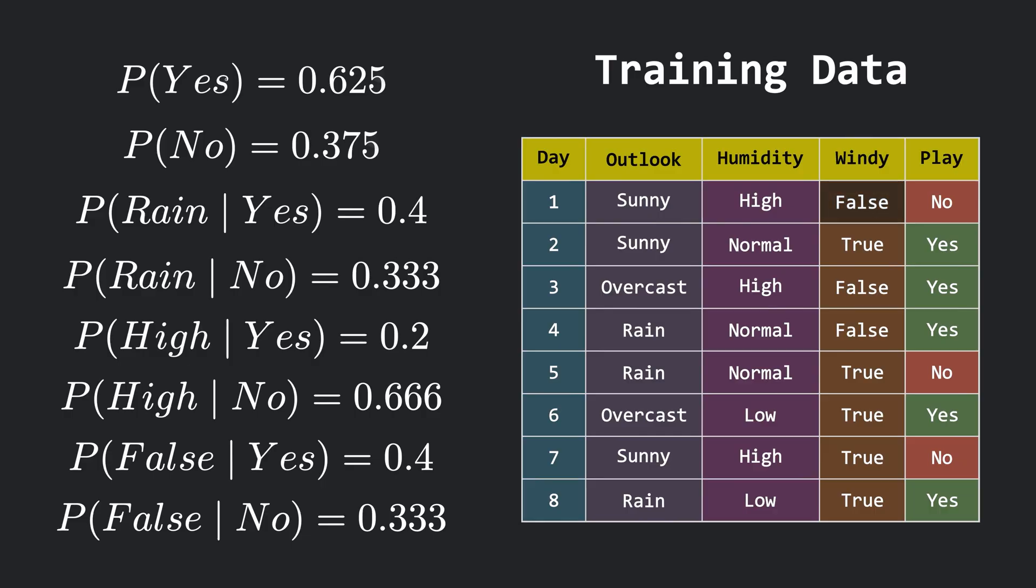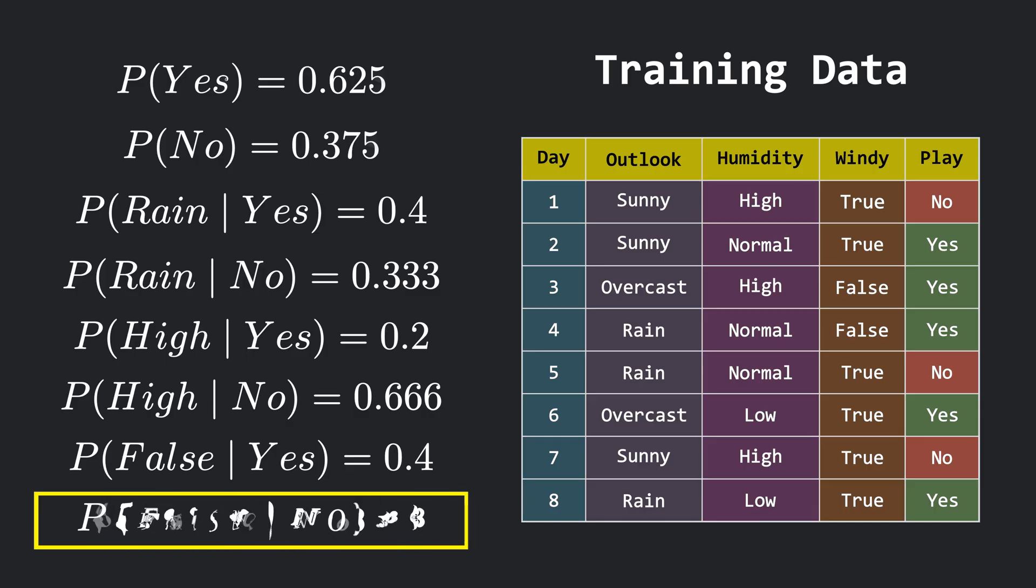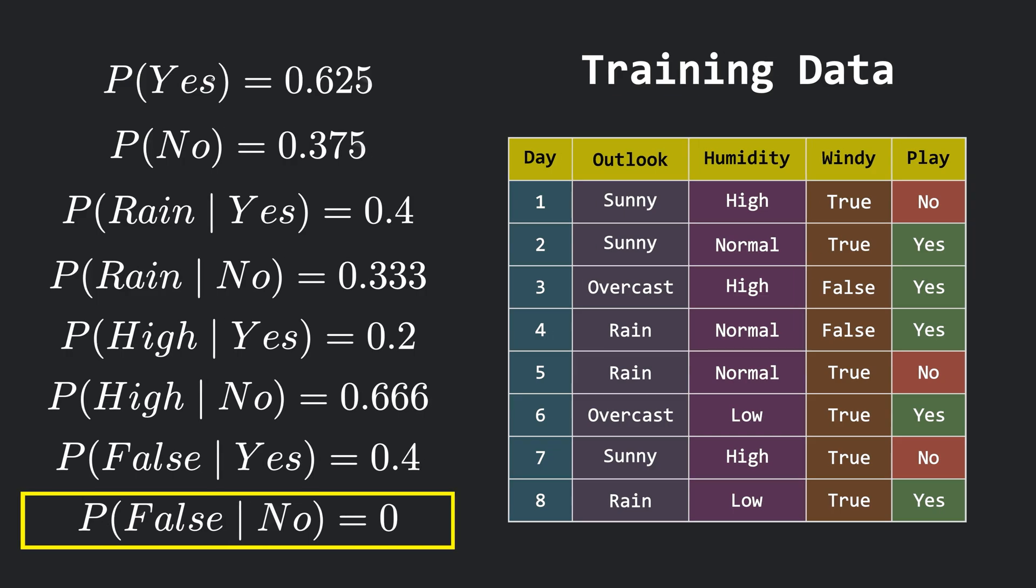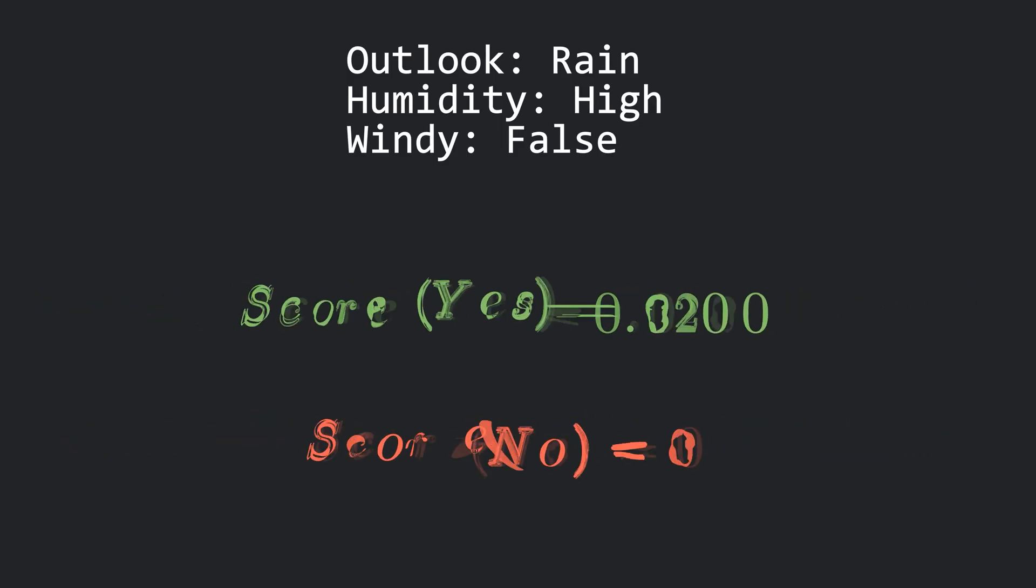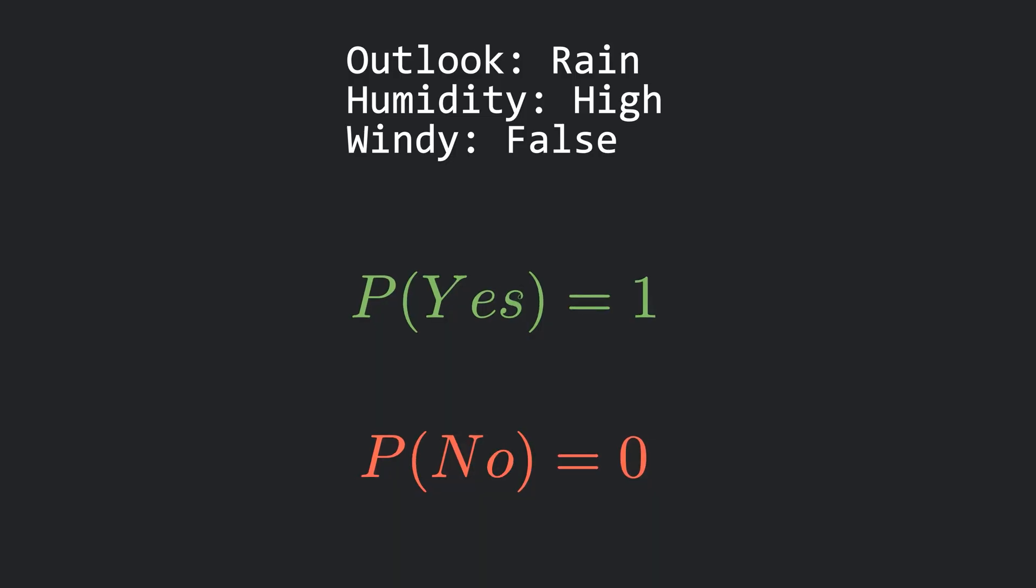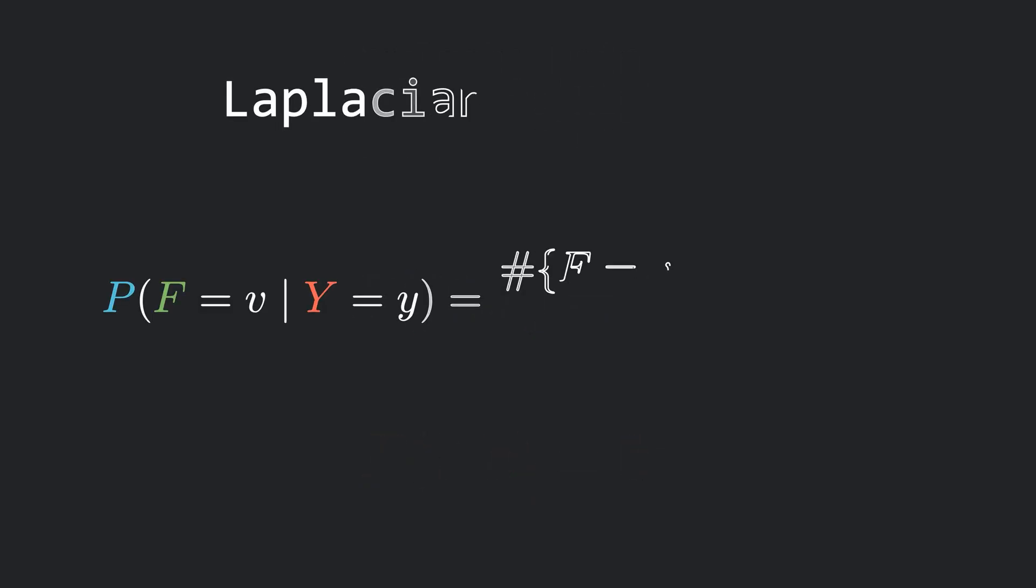Now let me teach you why we do not use this plain approach. Let's just change the windy feature of day 1 to be true. Now after changing just this one value, the entire calculation will be altered. Now if you calculate the probability of false wind given no, it will be 0, because there was no day with no wind when the game was not played. So the probability becomes 0. The rest will remain as it is. Now if we plug these values into the score equation, one of these scores will turn out to be 0, which means the probability of one event becomes completely 0. But this does not make any sense, right? And yes, that's exactly why we use something called Laplacian smoothing to deal with this zero probability problem.